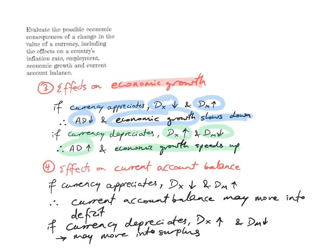What about effects on the current account balance? The current account balance essentially tracks exports of goods and services versus imports of goods and services. If the currency appreciates, foreign demand for exports will fall because exports become more expensive for foreigners, and domestic demand for imports will rise. The current account balance may move into deficit, other things held constant.